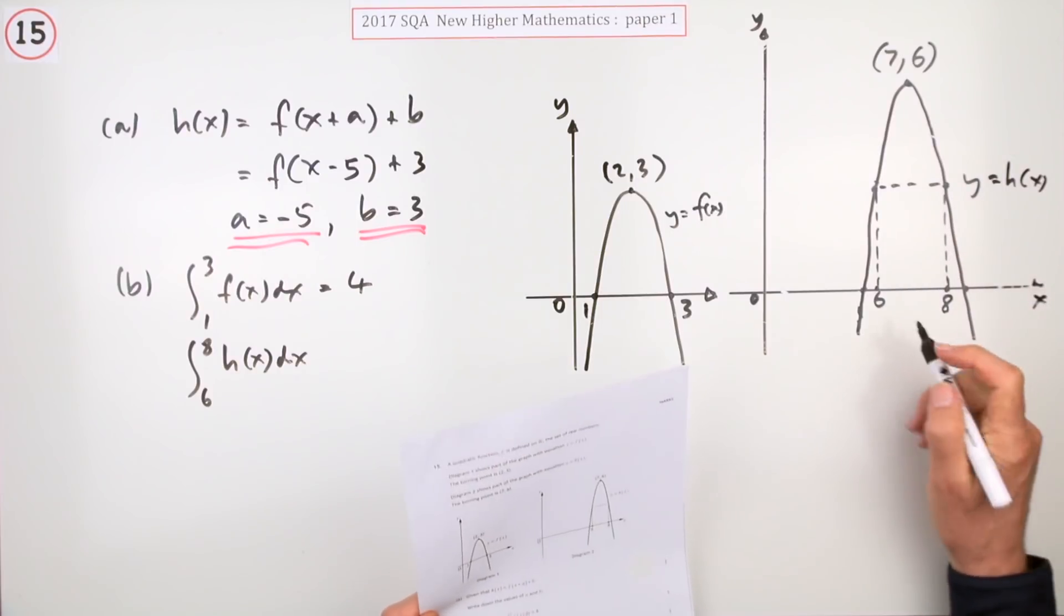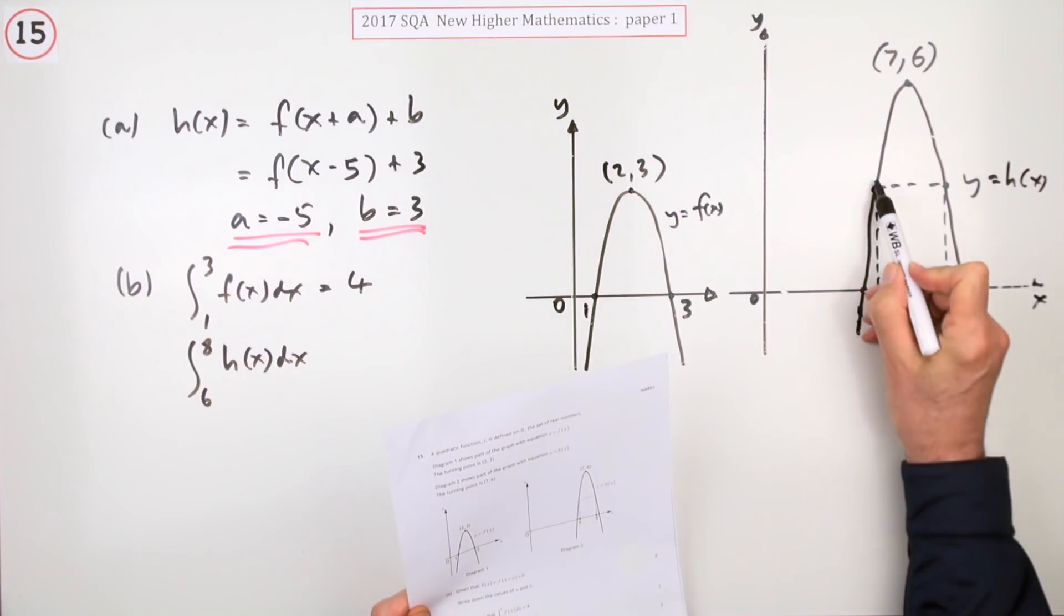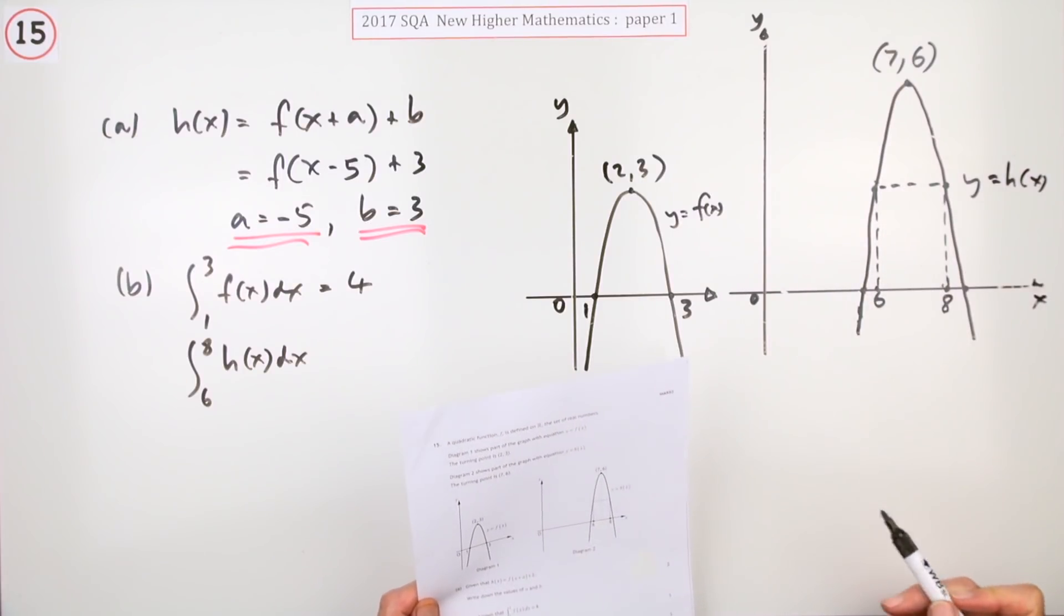What's the value of the integral of this one from 6 to 8? But that doesn't mean the total area under it from this point to this point. It's from 6 to 8, from that vertical line if you were to shade it in all the way up to the vertical line for 8.